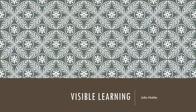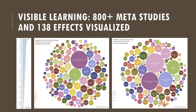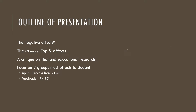Good afternoon everyone. My session is about studying Visible Learning by John Hattie, a book from 2009. It is a meta-analysis of more than 800 research studies. The outline of my presentation today starts with the negative effects, then the top nine effects that John Hattie selected. I'll also compare with Thai educational research, since Khun Ping and Khun Tony already presented on the topic, and suggest a focus on the two groups with the most effects on students.